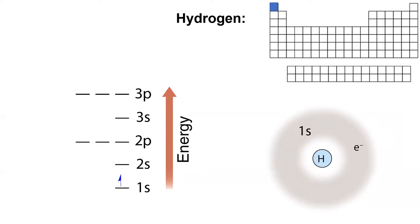It doesn't matter whether you draw the arrow up or down. The electron configuration for hydrogen is 1s¹. That means there's one electron in the 1s subshell.